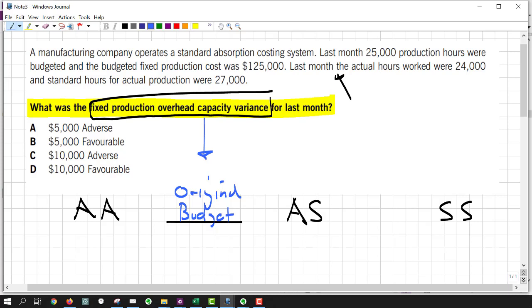Now, we've got these letters, AA. That stands for actual hours times the actual rate. It's really just the actual spend. How much money came out of my pockets to pay for my overheads? Now, ASSS, that's going to be actual hours, standard rate, standard hours, standard rate. Are you with me?